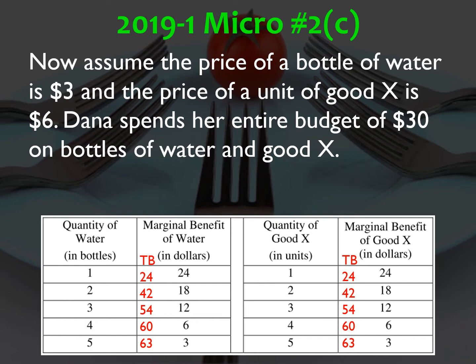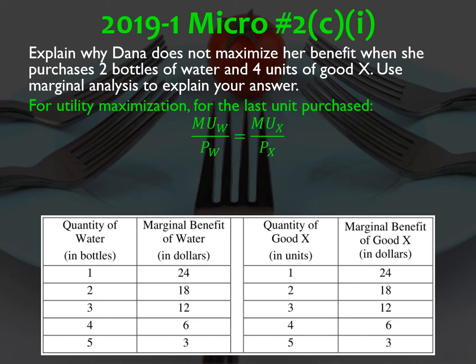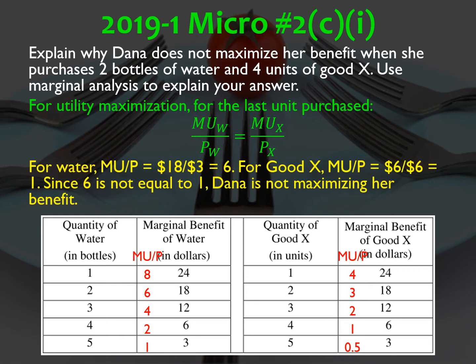Part C: assume the price of a bottle of water is $3 and the price of a unit of good X is $6. Dana spends her entire budget of $30. Explain why Dana does not maximize her benefit when she purchases two bottles of water and four units of good X using marginal analysis. The rule for utility maximization is that the marginal utility of each good divided by its price must be equal. For two bottles of water, her last marginal utility is $18 divided by $3, giving a ratio of six. For good X, the fourth unit gives a marginal utility of $6 divided by $6, a ratio of one. The ratios are not equal, so Dana is not maximizing her benefit.